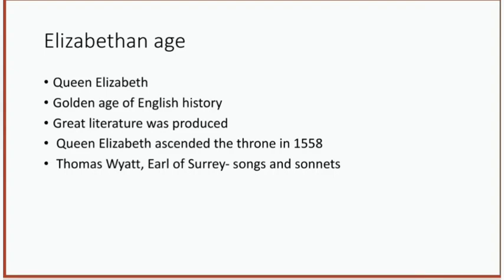Queen Elizabeth ascended the throne in 1558. The Elizabethan age is divided into two parts. The first part covers the first 30 years, that is from 1558 to 1588. The second part consists of the period from 1589 to 1603. Some of the best poetry and drama was produced during the Elizabethan period.